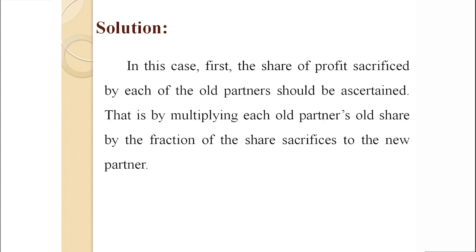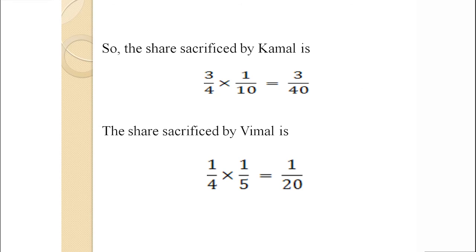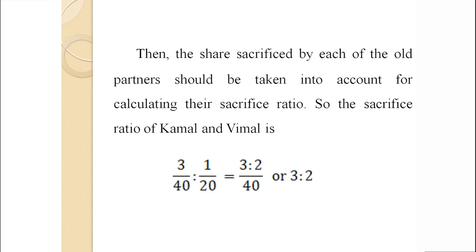In this case, first the share of profits sacrificed by each old partner should be ascertained by multiplying each old partner's old share by the fraction of the share sacrificed to the new partner. The share sacrificed by Kamal is 3/4 × 1/10 = 3/40. The share sacrificed by Vimal is 1/4 × 1/5 = 1/20. Then the share sacrificed by each old partner should be taken into account for calculating their sacrifice ratio. So the sacrifice ratio of Kamal and Vimal is 3/40 : 1/20, that is 3:2.